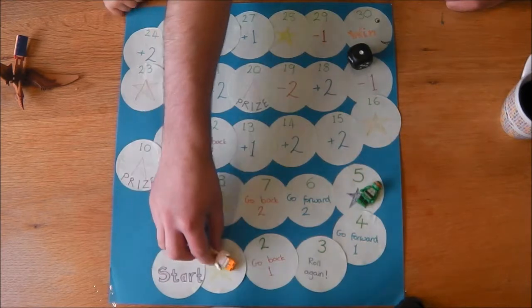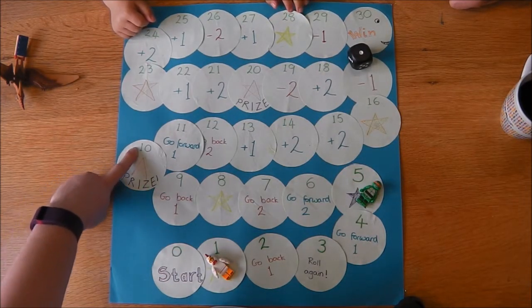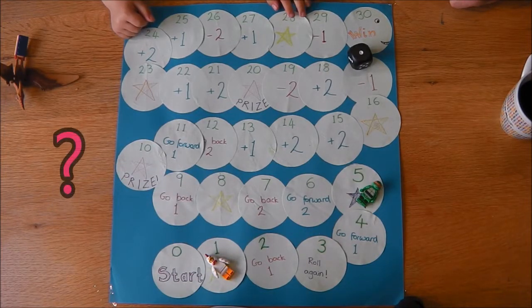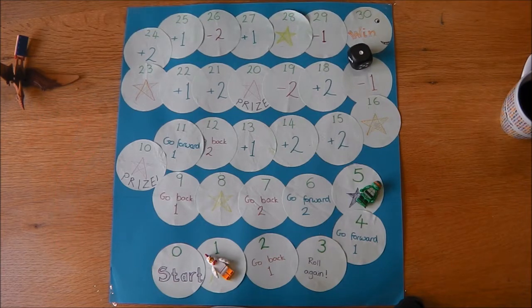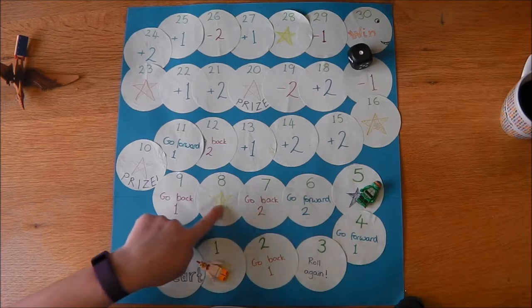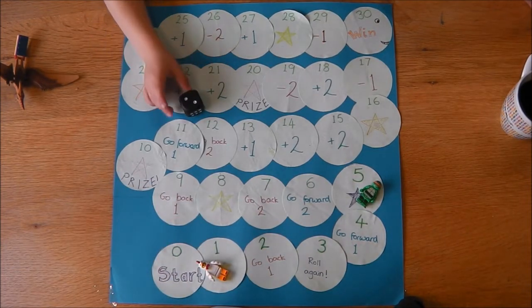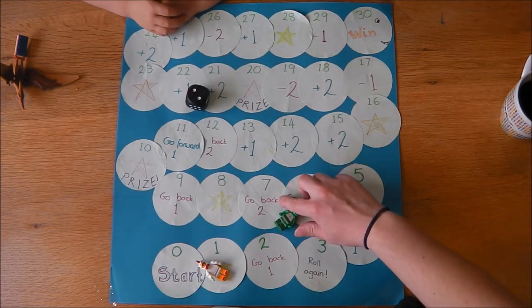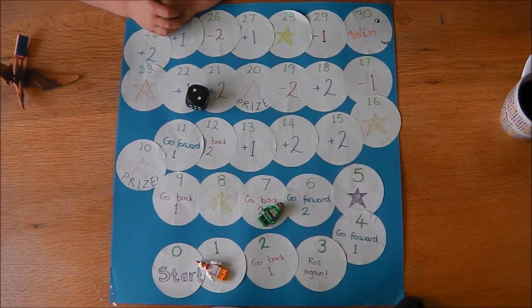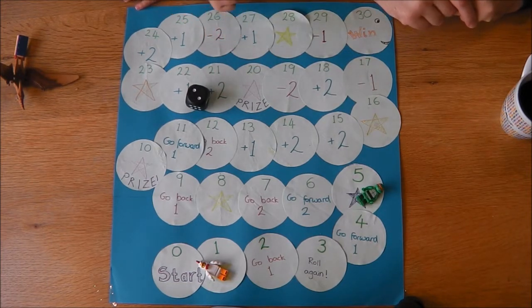Daddy's turn. 1. Dougie rolled a 2 and landed on 7. And this says go back 2. So you have to go back 2. What number are you on now? 5 again. Because you went forward 2 and then it said go back 2.